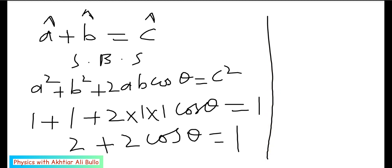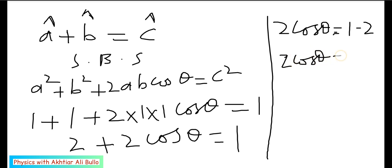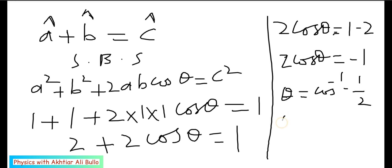So 2cosθ = 1 − 2, which gives 2cosθ = −1. Therefore θ = cos⁻¹(−1/2). As we know, cos⁻¹(−1/2) = 120°, so the angle between the two unit vectors is 120°.